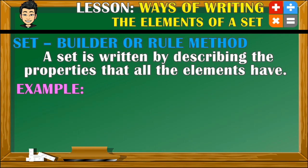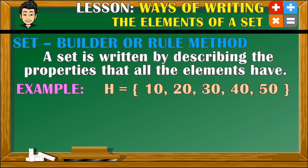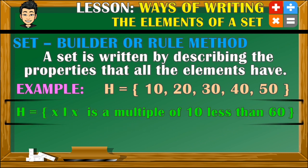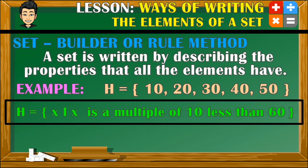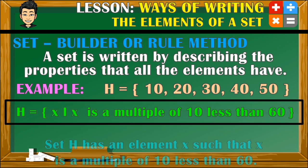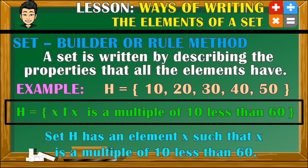For the last example, we have set H with the following elements. Clearly, the elements are multiples of 10. But to be specific, they are multiples of 10 less than 60. And so our set will be written down like this. Set H has an element x such that x is a multiple of 10 less than 60.